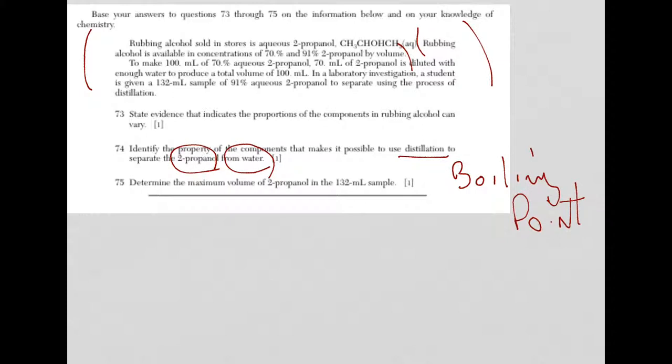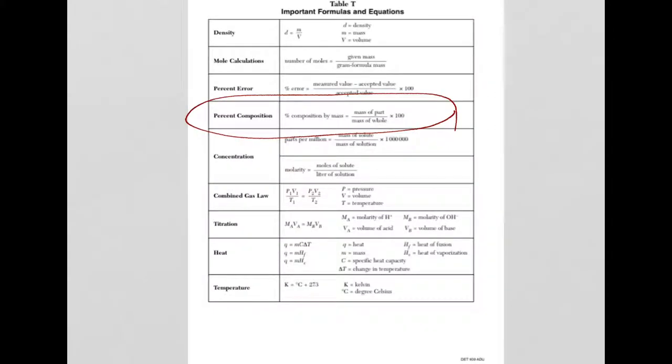Let's take a look at 75. Determine the maximum volume of 2-propanol in the 132-milliliter sample. Well, in that 132-milliliter sample, the information from the reading passage is you're dealing with the 91% 2-propanol. So, what do you need? You need some sort of mathematical formula. Reference table T has them all. I've already circled it. Percent composition equation.